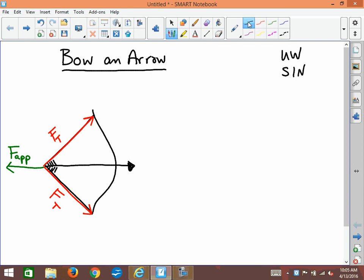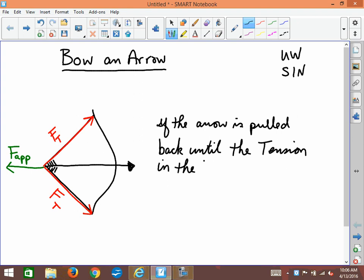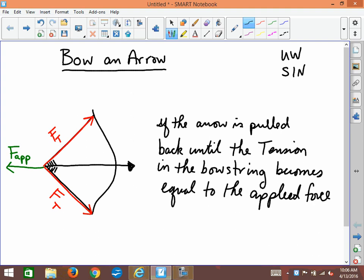Here's the setup to the question: If the arrow is pulled back until the tension in the bowstring becomes equal to the applied force, what is the angle?